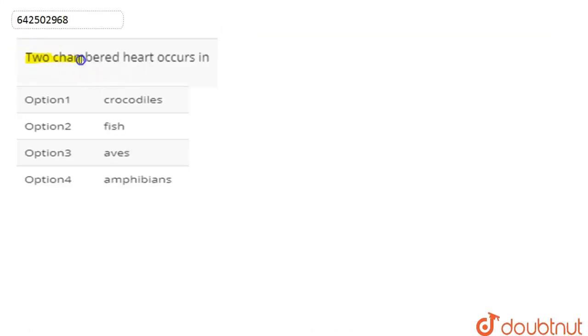We are asked: the two-chambered heart occurs in which animals? The options given to us are crocodiles, fish, aves, and amphibians.